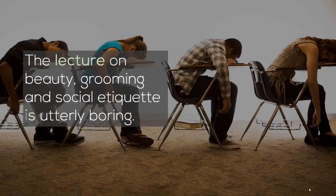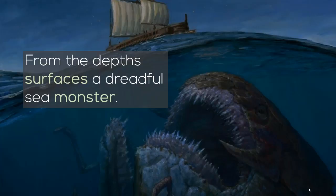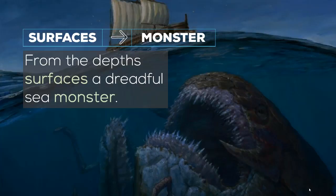What happens if the subject is at the end of the sentence? It's not your usual style, but totally possible. For example: from the depths surfaces a dreadful sea monster. You can see that surfaces follows monster. Normally the main noun is in front, but here it's behind, because from the depths is the location, not the subject. So we follow monster, which is singular — surfaces, not surface.